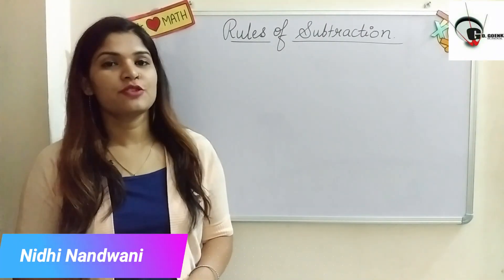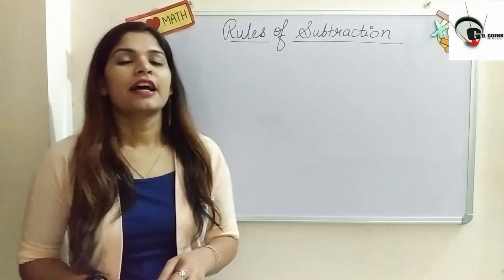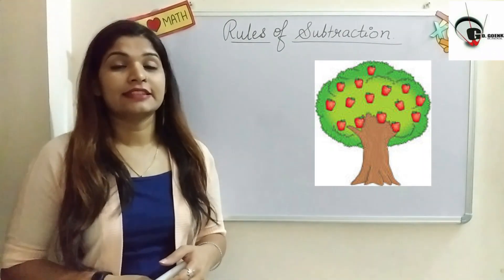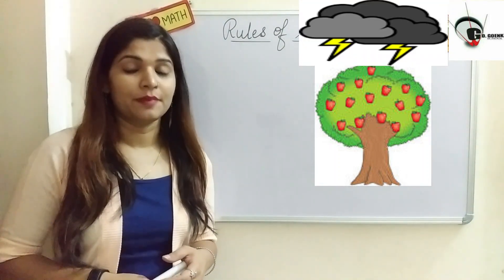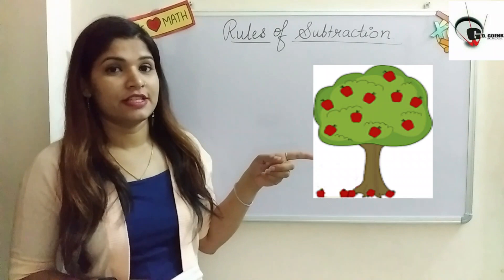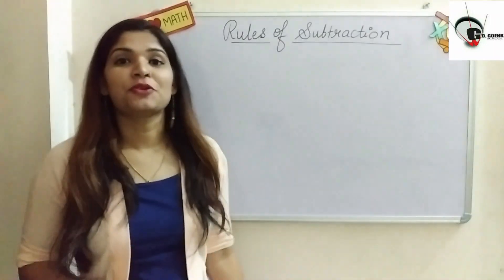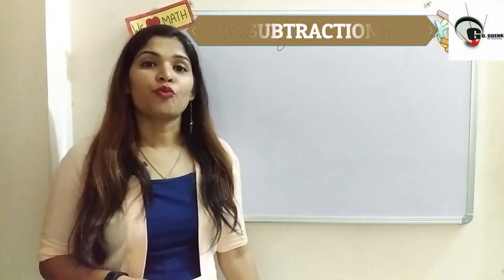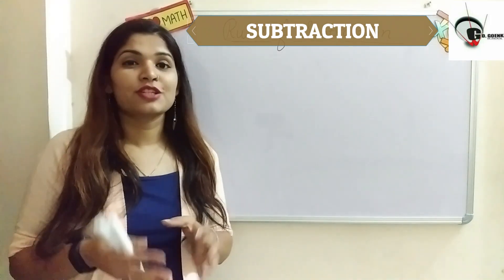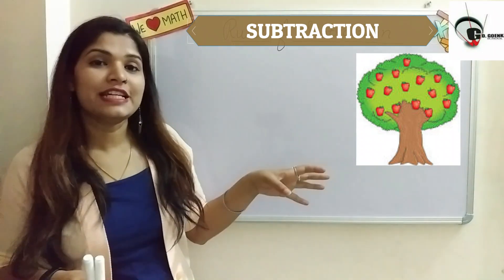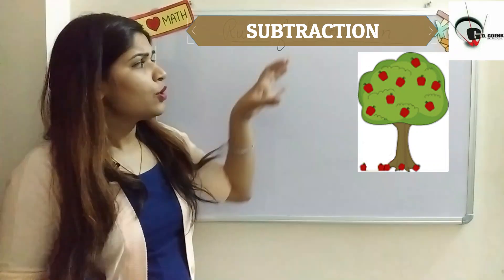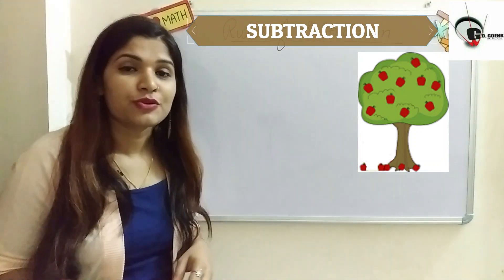Hello children, before starting today's topic let me tell you a short story. There is an apple tree with 15 apples on it, and suddenly the storm came up. Due to that storm, five of the apples from the tree fell down. So subtraction is all about removing objects from a collection — we had 15 apples and five were removed, leaving 10 apples on the tree.